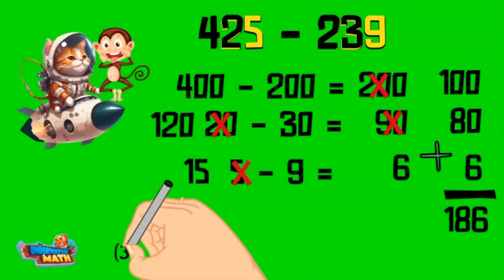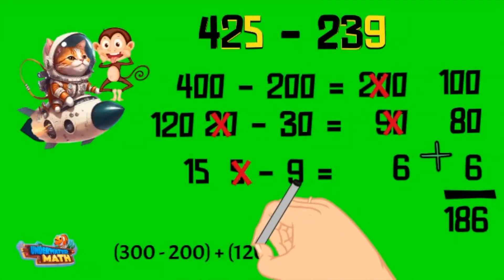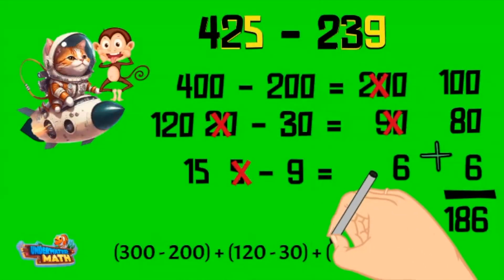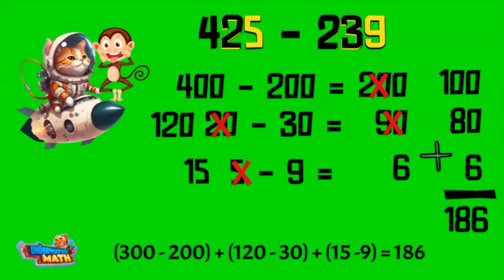The equation looks like this: 300 minus 200 plus 120 minus 30, because we borrowed 100 from the hundreds place, plus 15 minus 9. The 15 is because we borrowed 10 from the tens place and the whole thing equals 186.